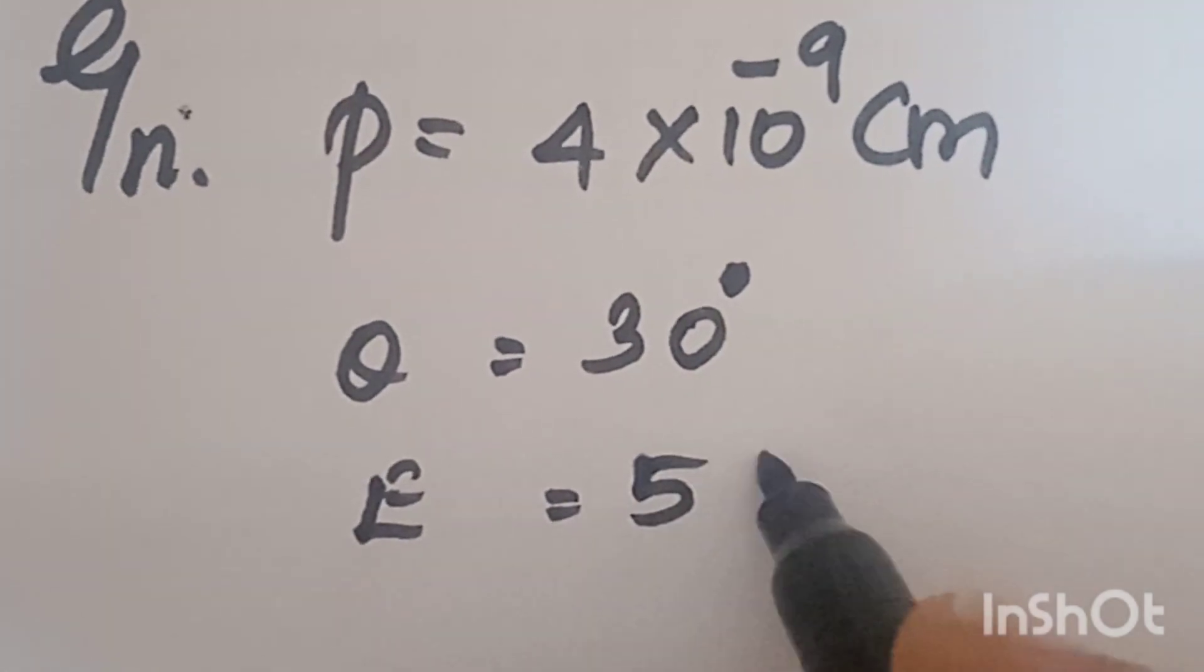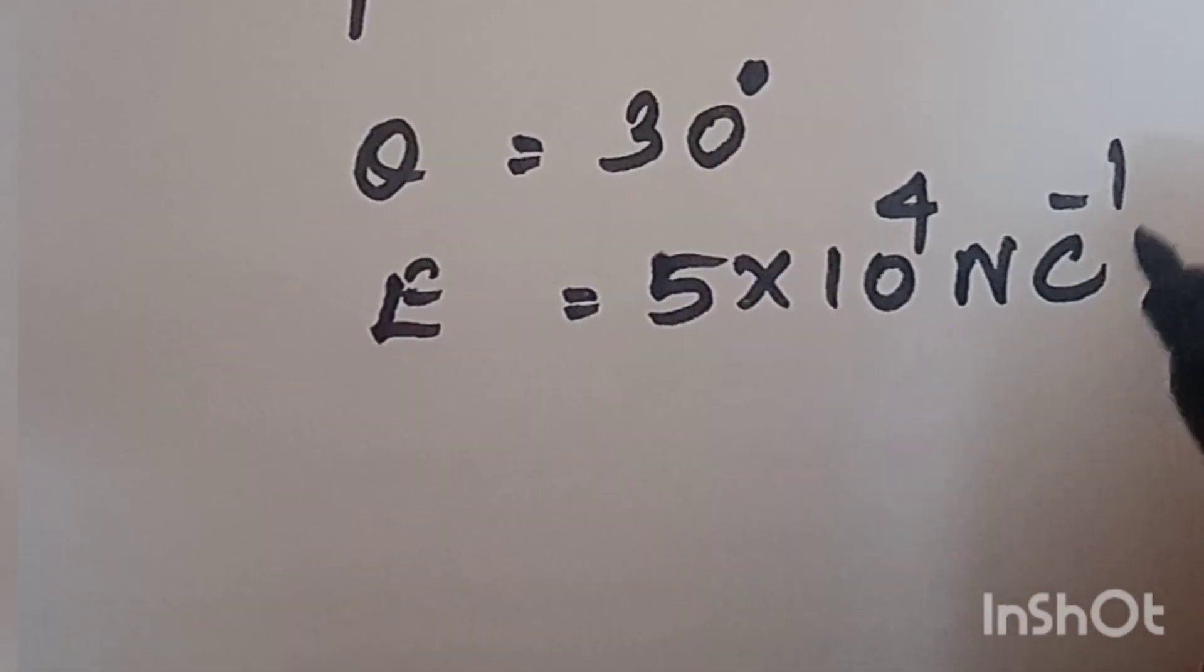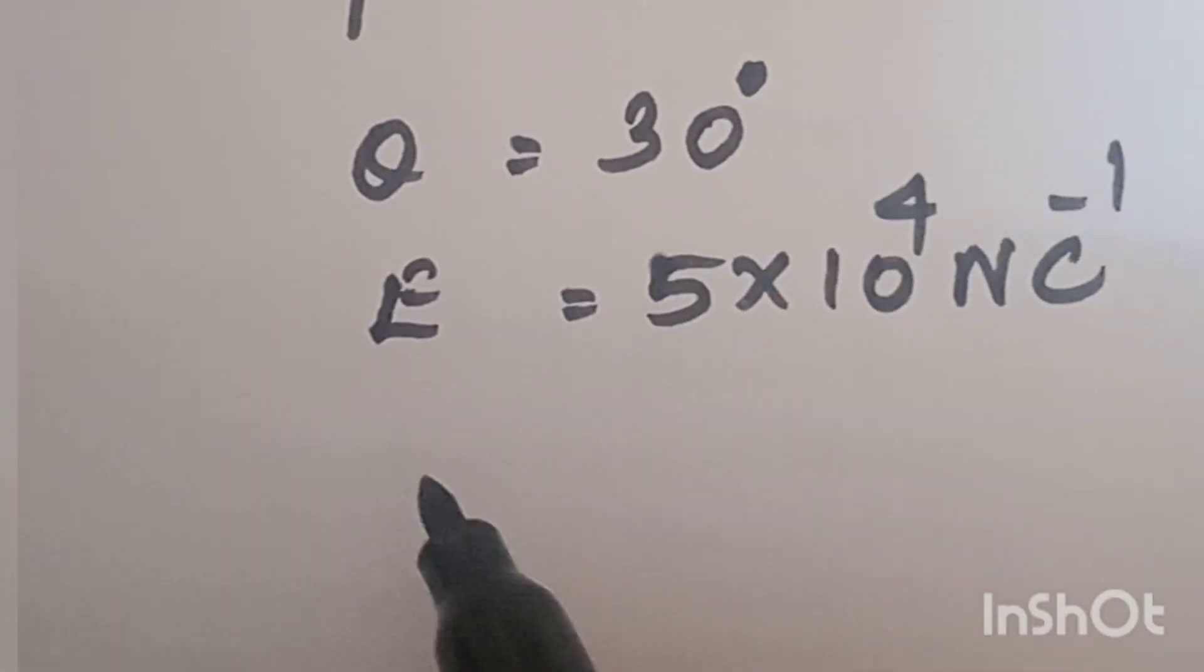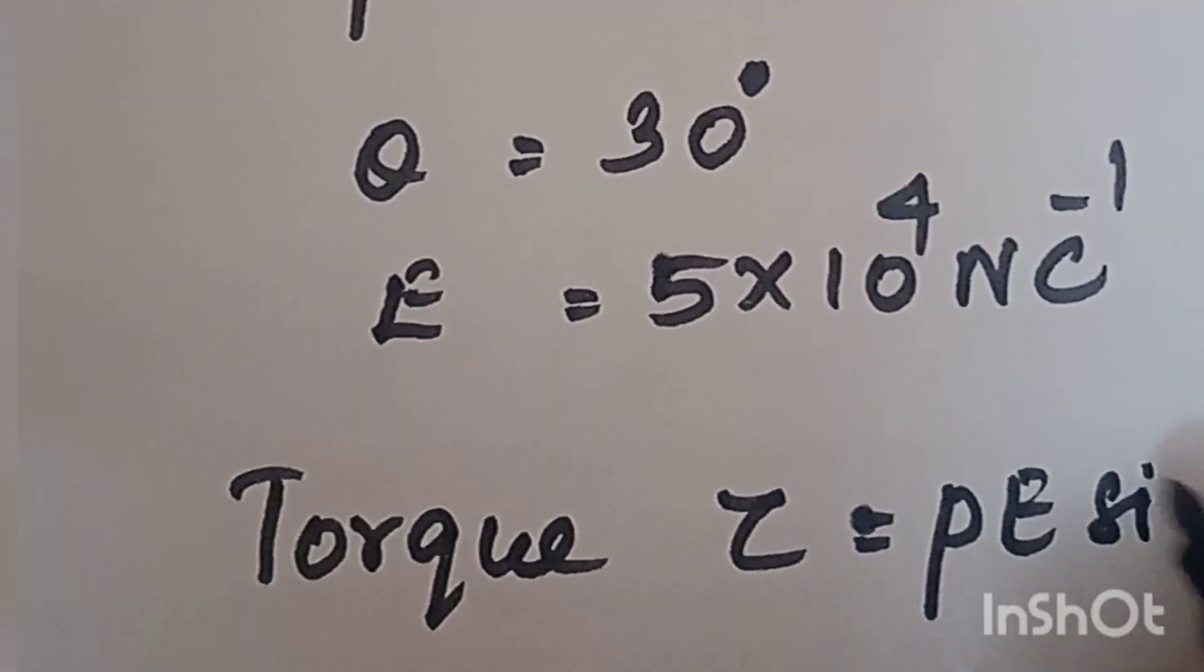The electric field value is 5 × 10^4 newton per coulomb. Now calculate the torque. The torque formula is τ = PE sin θ.